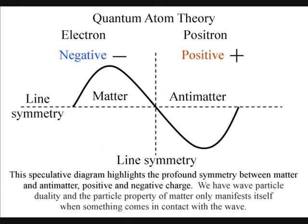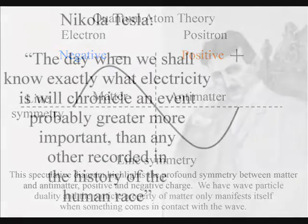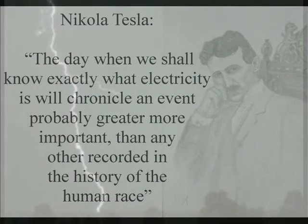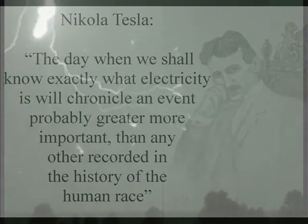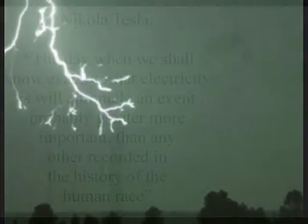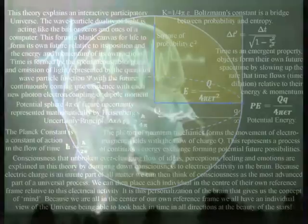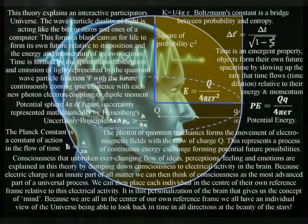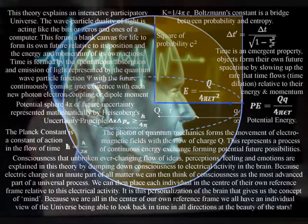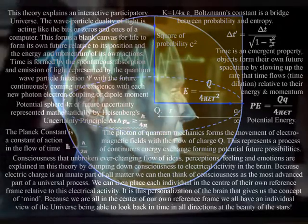The great inventor of AC current Nikola Tesla said: the day when we shall know exactly what electricity is will chronicle an event probably greater and more important than any other recorded in the history of the human race. This theory agrees with him, because it is electrical activity in the brain that forms conscious awareness. By reducing consciousness to the level of electrical activity in the brain that is aware of its own electrical potential, this theory can explain conscious awareness as the most advanced part of this universal process.